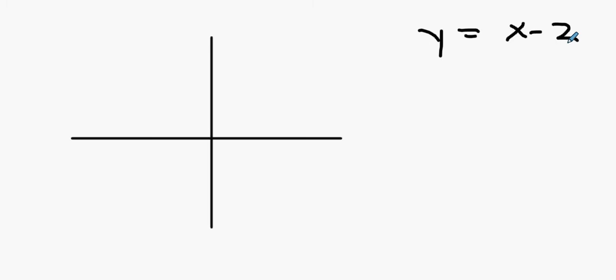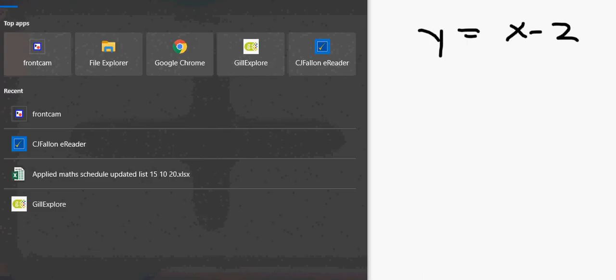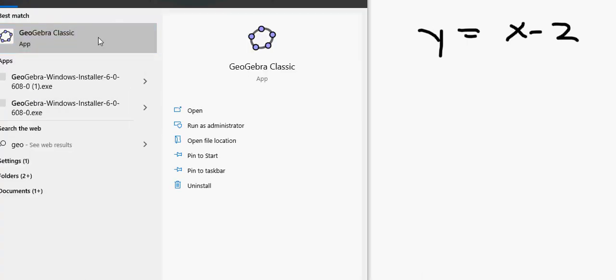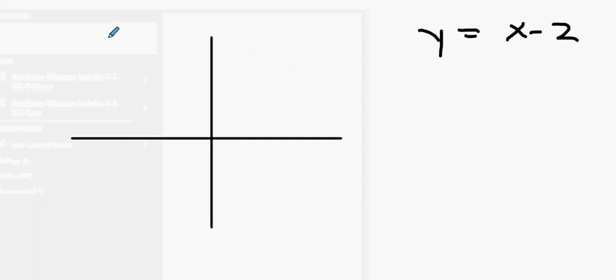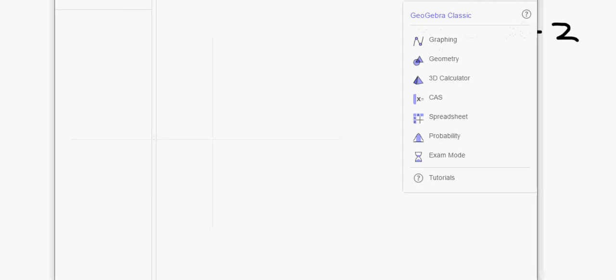Graphs of modulus functions look really weird — they're highly unusual. So if you take a graph of, let's say, y equals x minus 2 as a good example. When y equals x minus 2, you've all drawn that straight line before, but the modulus is unusual.